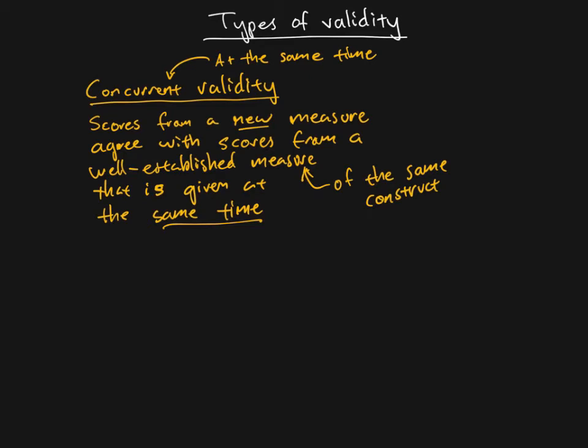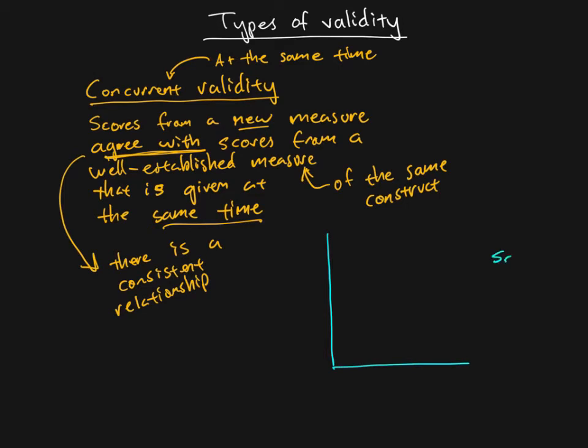I said that scores from a new measure agree with scores from a well-established measure. What I mean is if someone got high scores on the one, they got high scores on the other. If they got low scores on the one, they got low scores on the other. In other words, what we're seeing with this is we're seeing there is a consistent relationship between the two sets of scores. And hopefully you've seen this in statistics class, but we can graph this using what's called a scatter plot.